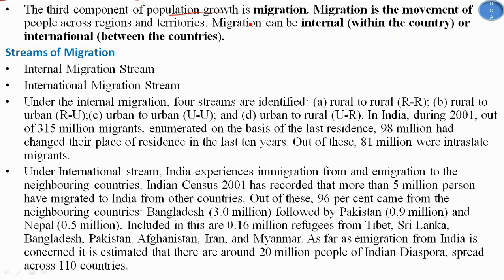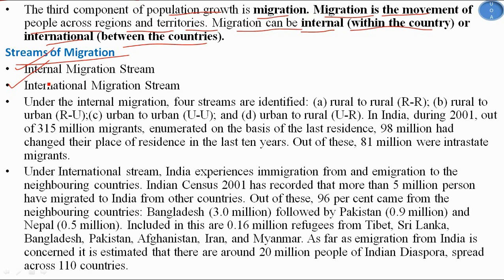The third component of population growth is migration, which is an induced component. Migration is the movement of people across regions and territories. It can be internal — within the country — or international, between countries. Under internal migration, four streams are identified: rural to rural, rural to urban, urban to urban, and urban to rural, with urban to rural being the least common.